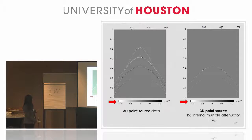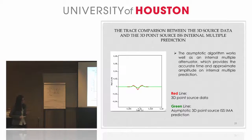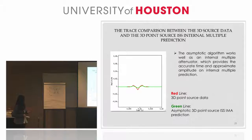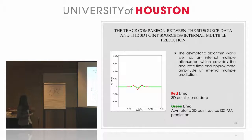After that, we pick up one trace to do a trace comparison. Since this algorithm is an internal multiple attenuator on first-order internal multiples, we only look at the first-order internal multiple. The red line represents the internal multiple in our original 3D point source data, and the green line represents the internal multiple prediction using the asymptotic 3D point source internal multiple attenuation algorithm. This asymptotic algorithm works very well, providing accurate time and approximate amplitude on the internal multiple prediction.